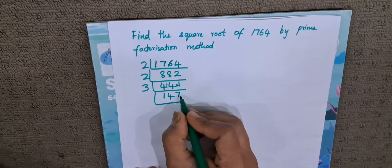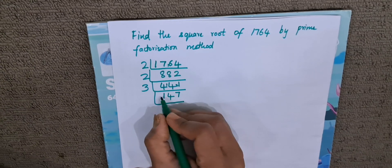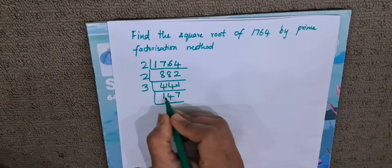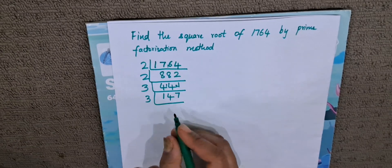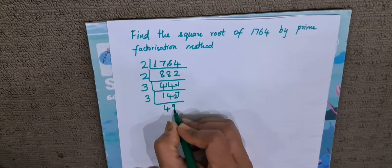Again 147, we will check if it is divisible by 3. 7 plus 1 is 8 plus 4 is 12. 12 is divisible by 3, so 147 is also divisible by 3. 3 4s are 12, 2 is the remainder. 3 9s are 27.